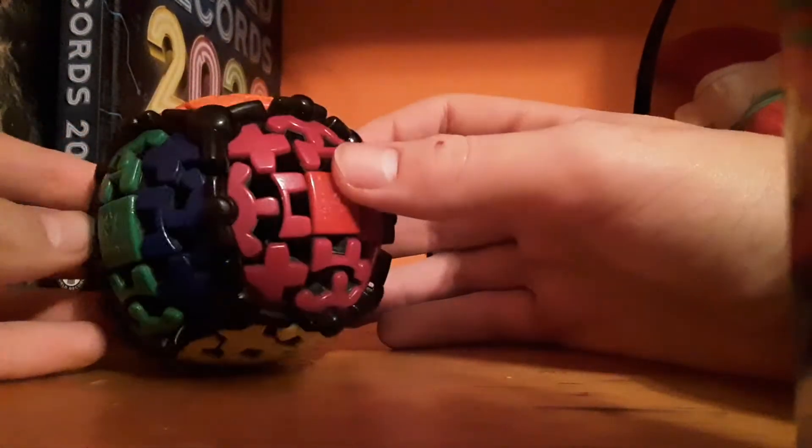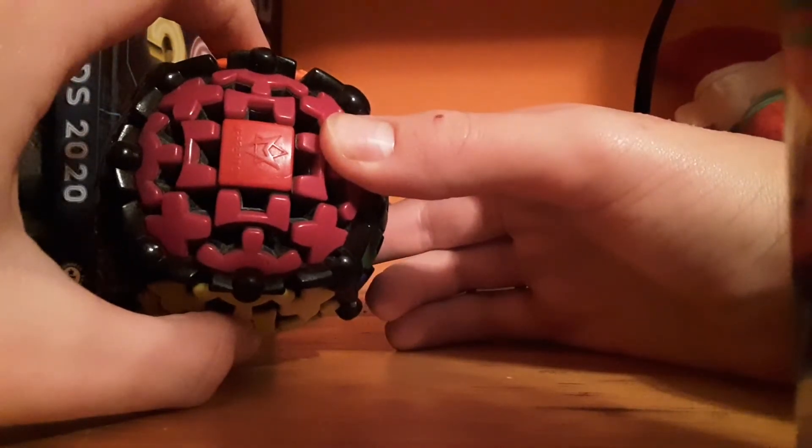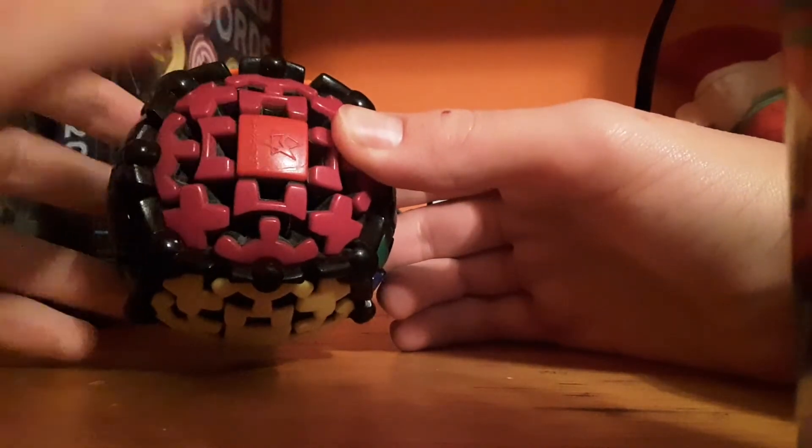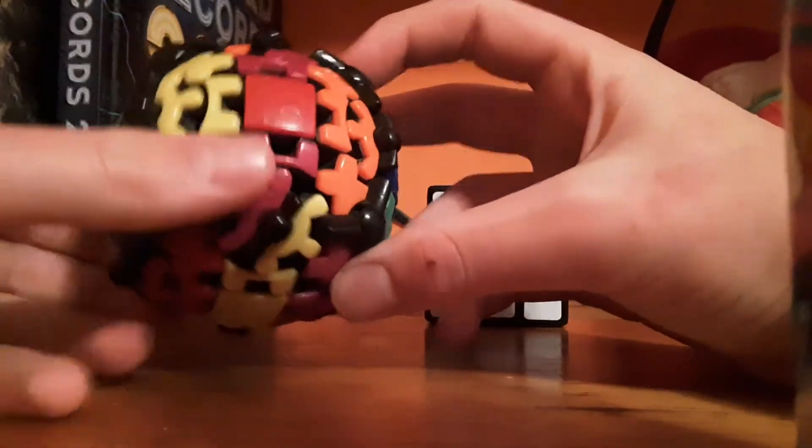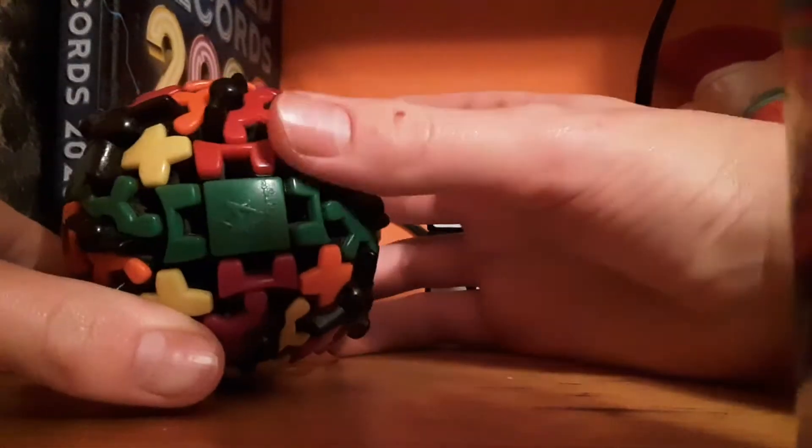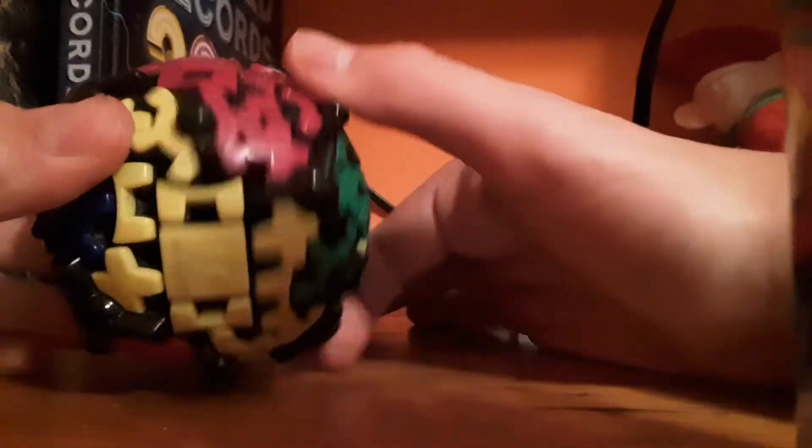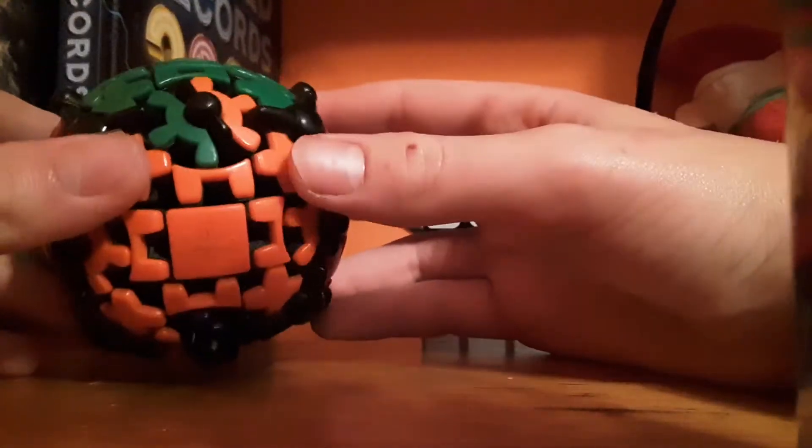What you can actually do is, I believe, you hold it so that the two are solved on the top and bottom. And you have the unsolved center facing you. And you turn the right down. And then you move this, you basically just move this twice. There's once, there's twice. And then you can move the right back up. And you basically have it solved. Except for the corners.